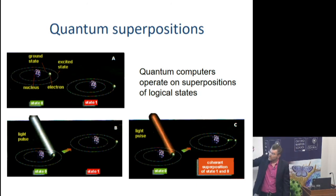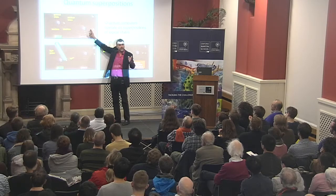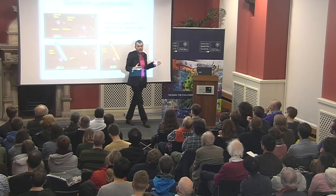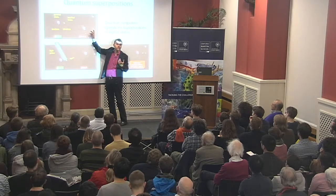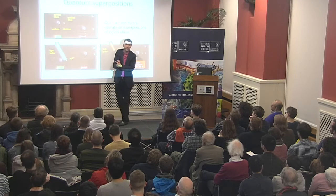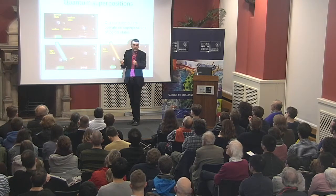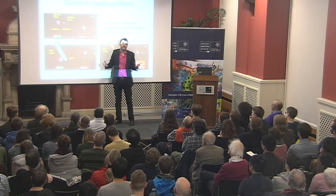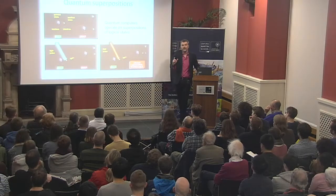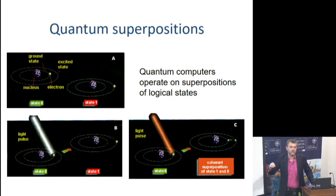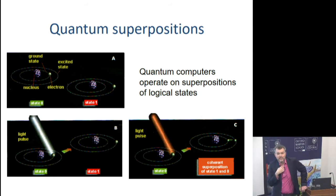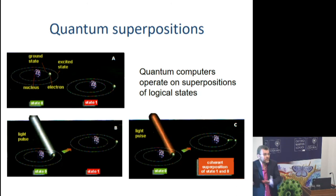How is this different from the standard computer? The difference is that if you stop your laser light halfway through moving the electron from one state to the other, quantum physics says it's going to be simultaneously in both states — that's your superposition state. As the famous physicist Richard Feynman said, this is the only mystery in quantum mechanics. We don't understand it, so we physicists elevate it to a law of nature.